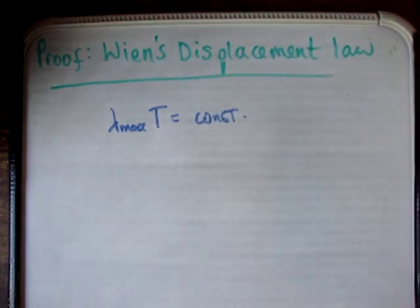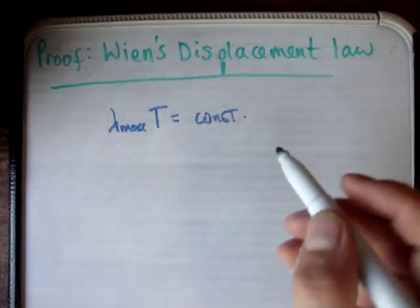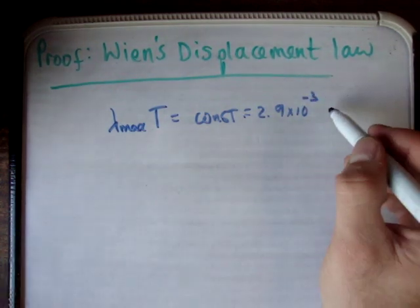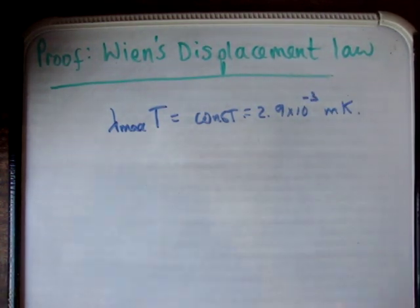Alright, and I'm just going to find out the constant. It's equal to 2.9 essentially times 10 to the negative 3.